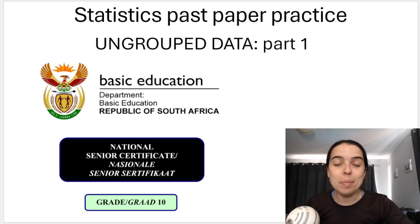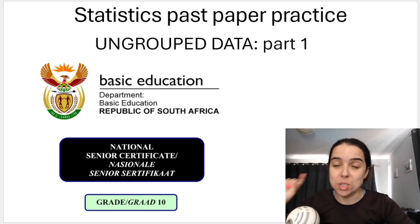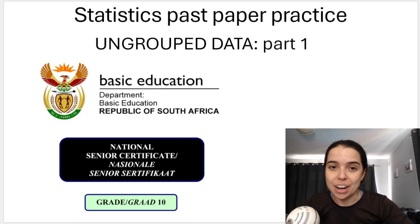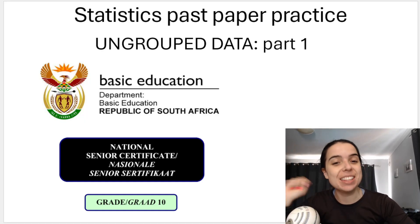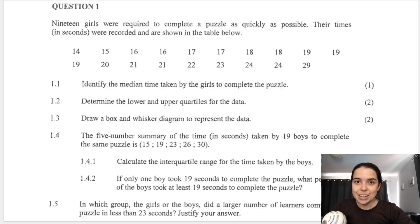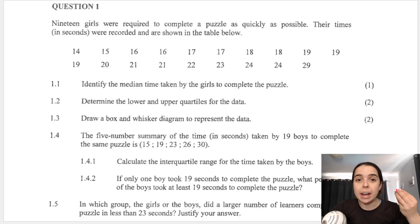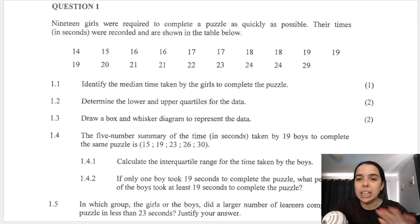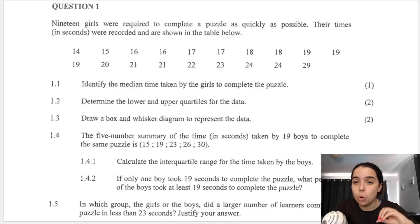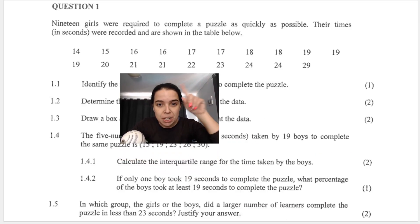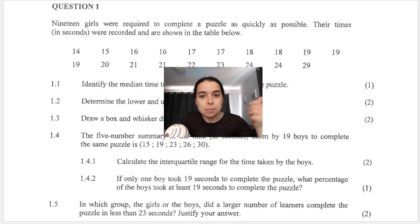In this video, we'll be looking at a past paper question for statistics or data handling, Grade 10, and grouped data. This is part one. The question says 19 girls were required to complete a puzzle as quickly as possible, and the times in seconds were recorded and shown in the table below. Here are the times.